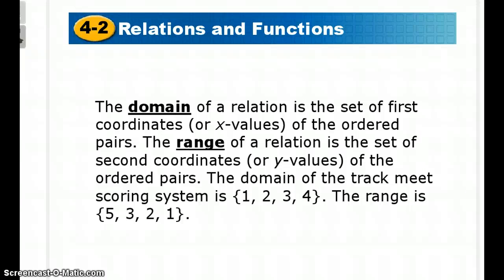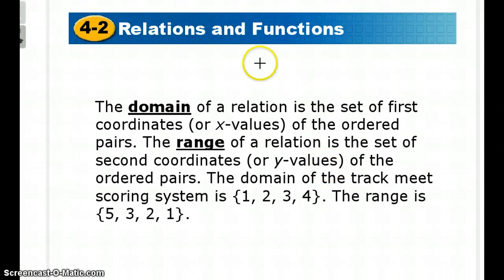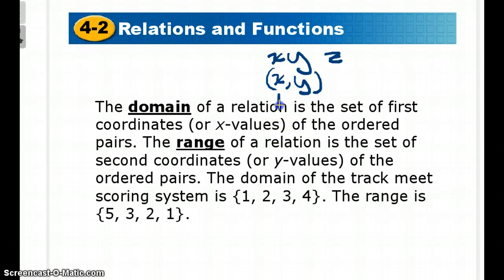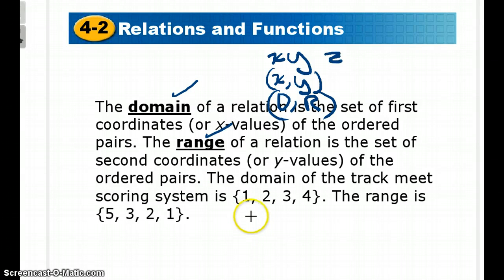So domain and range. The domain is just the set of x values, or the first coordinates of an ordered pair. Range is the set of y values, or the second coordinates. A way to remember which belongs to which: the end of the alphabet is x, y, z — and d comes before r in the alphabet, just like x comes before y in an ordered pair. So domain always belongs with x, and range always belongs with y.